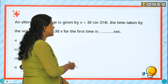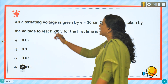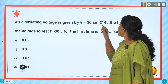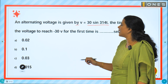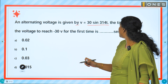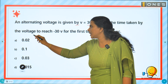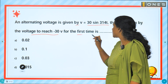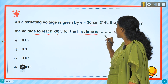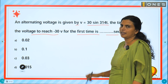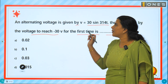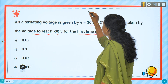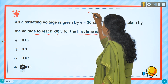The first question is: an alternating voltage is given by 30 sin(314T). The time taken by the voltage to reach minus 30 volt for the first time is blank seconds. So we have been given the instantaneous voltage: Vm sin(ωT).